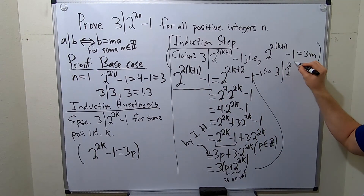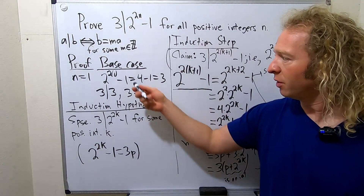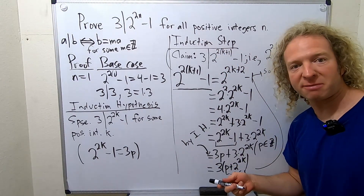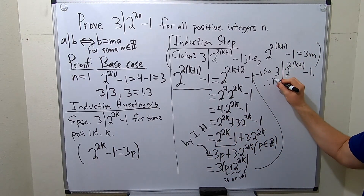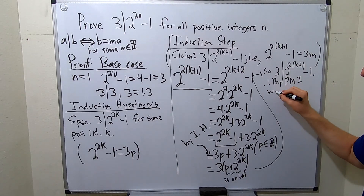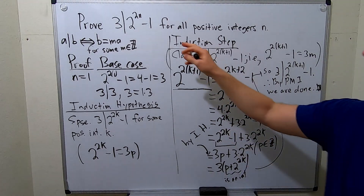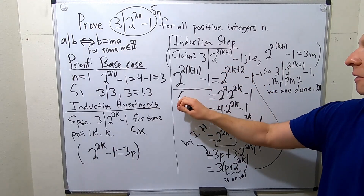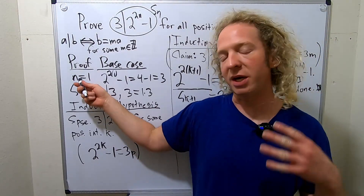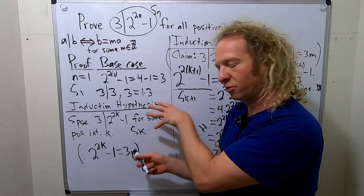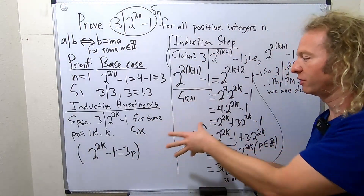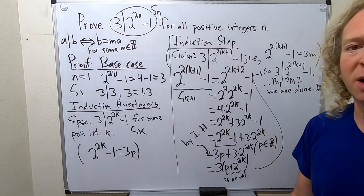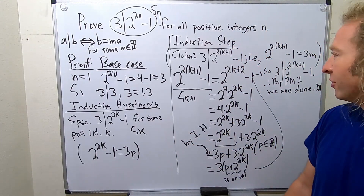So we did the base case, we assumed the statement was true for N equals K, and we showed it was true for K plus 1. By the principle of mathematical induction, it's true for all positive integers N. Therefore, by PMI, we are done. This is your S sub N, S sub 1, S sub K, and S sub K plus 1. To prove S sub N is true for all positive integers: first show it's true when N equals 1, then assume S sub K, then prove S sub K plus 1. By PMI, we are done with the divisibility proof. I hope this video has helped someone out there. Take care.